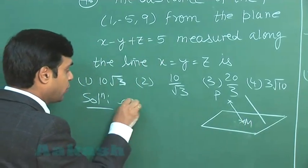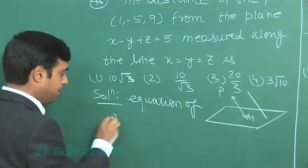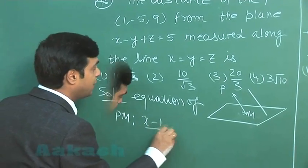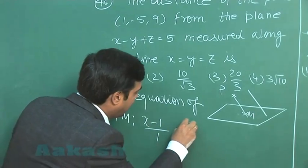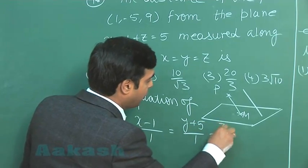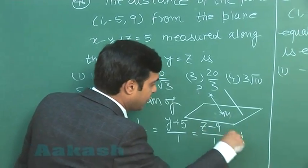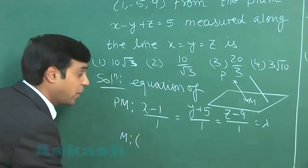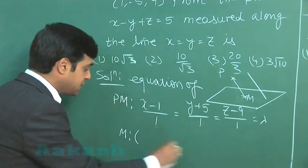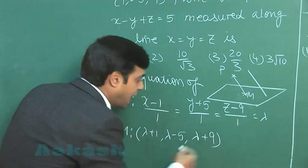We can write here equation of PM as (x - 1)/1 equals (y + 5)/1 equals (z - 9)/1 equals λ. Let us say the coordinates of the point M, we can simply obtain in terms of λ. This gives us λ + 1, λ - 5, λ + 9.